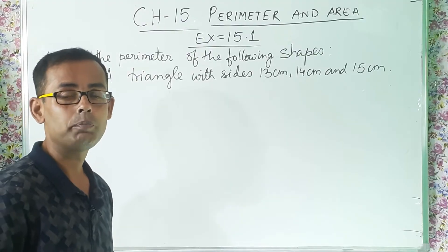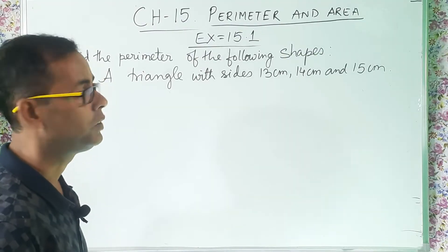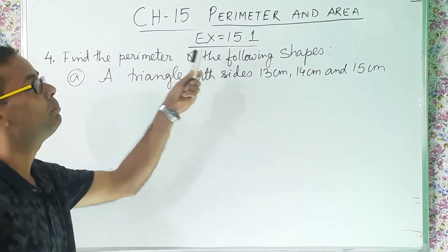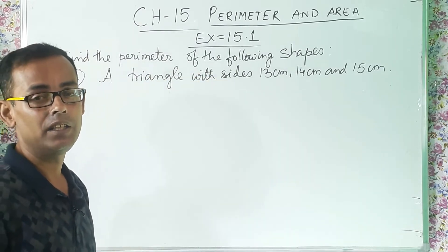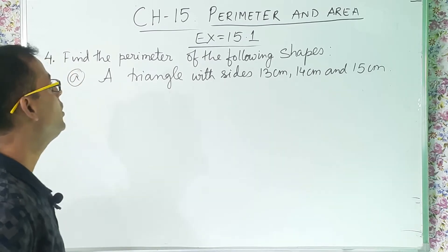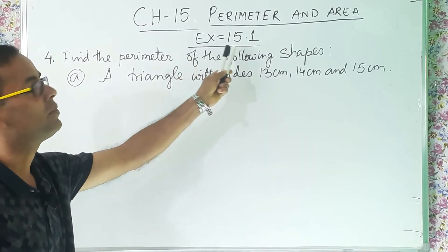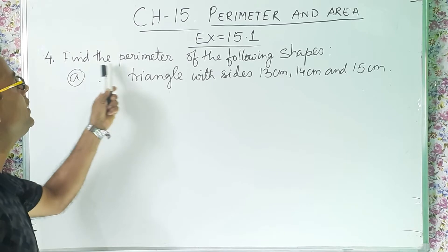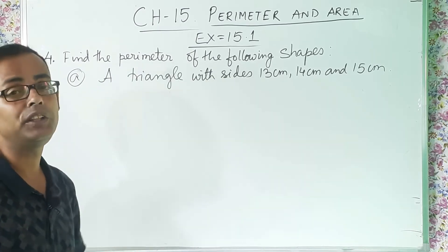So welcome back class 6 students. Today we are going to solve chapter 15 perimeter and area and this is part 5. Now we are going to solve exercise 15.1, question number 4. Find the perimeter of the following shapes.